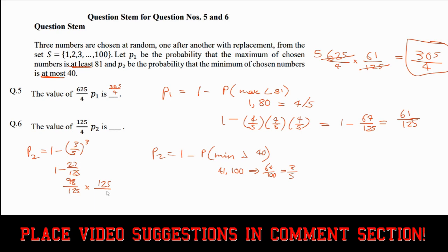Multiplying it by 125 over 4, these cancel out, giving us 98 over 4, which is just 49 over 2. And so that's our answer for this, 49 over 2. And there you have it.